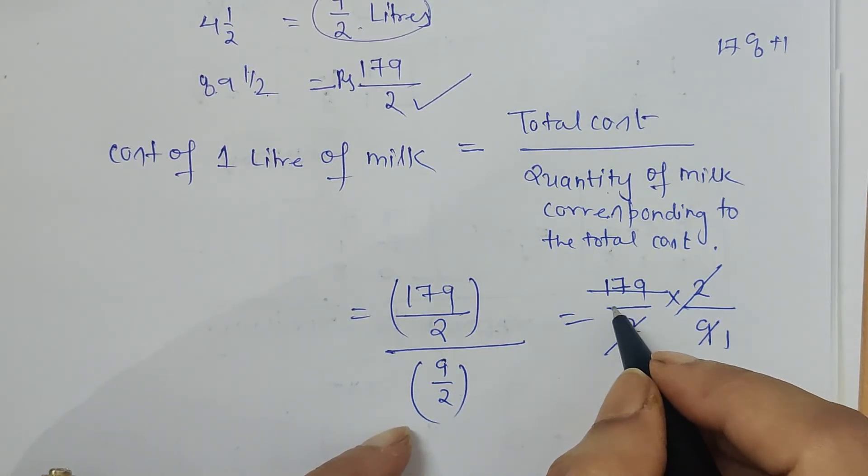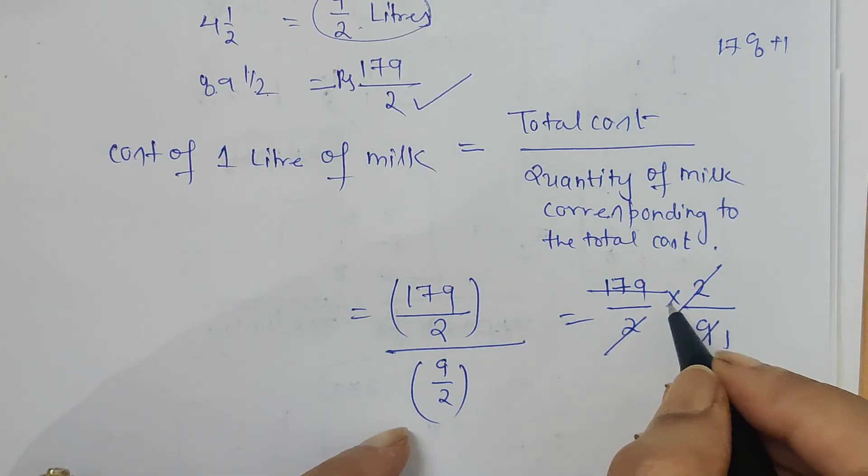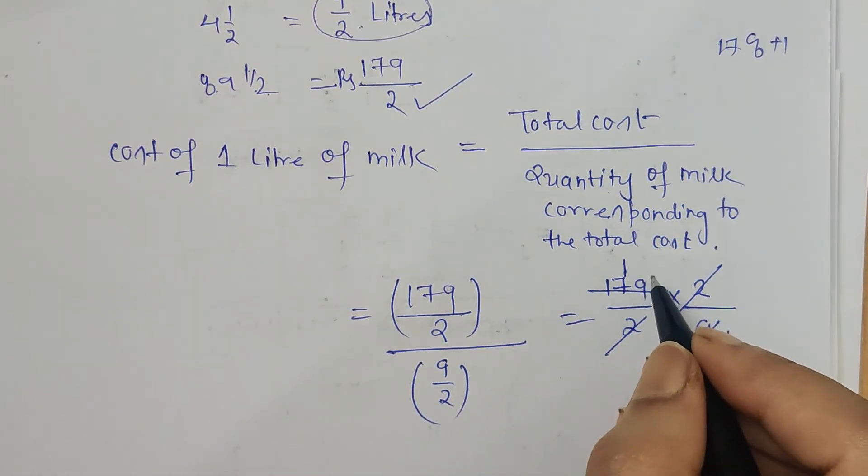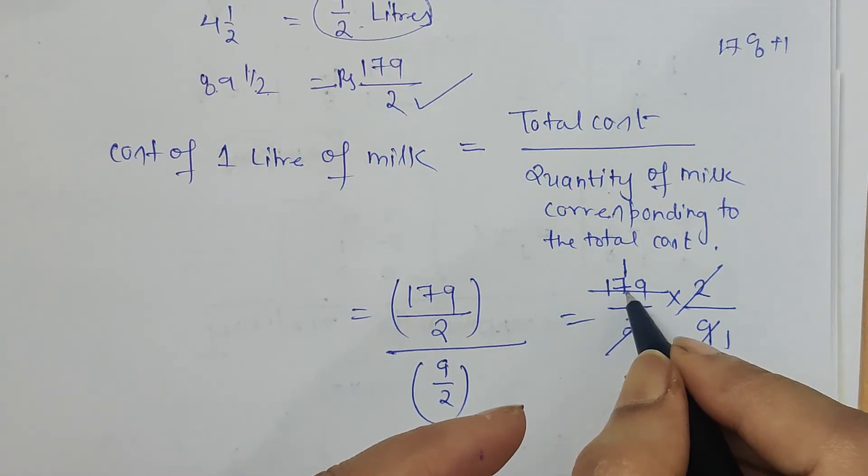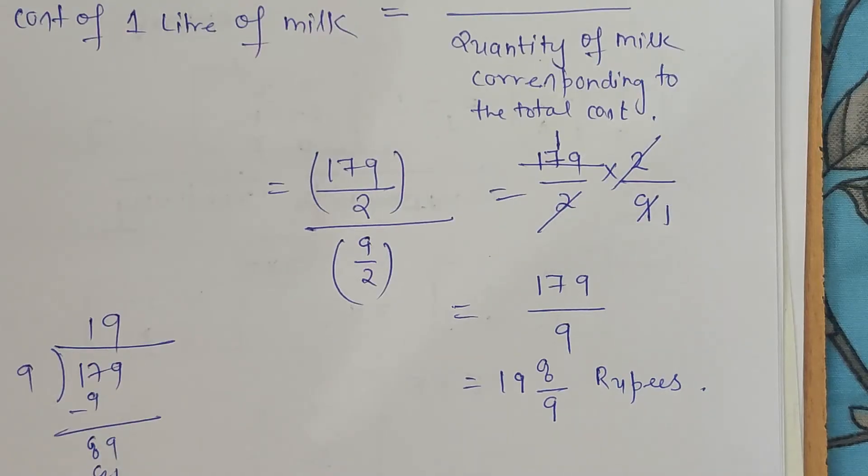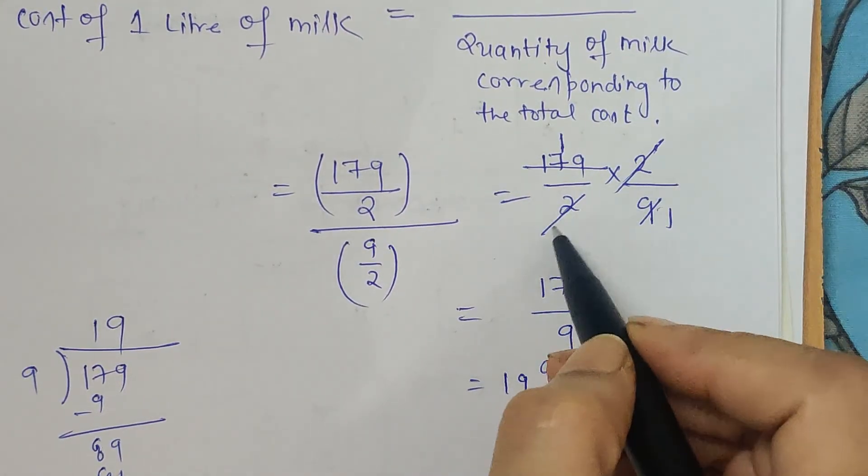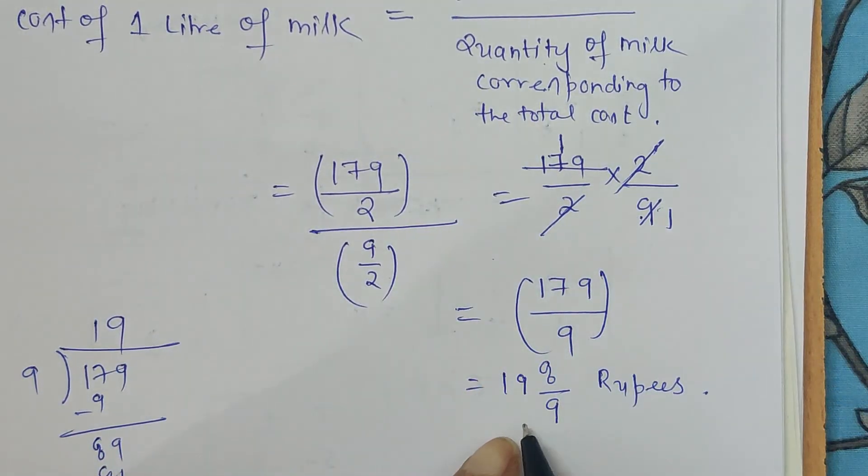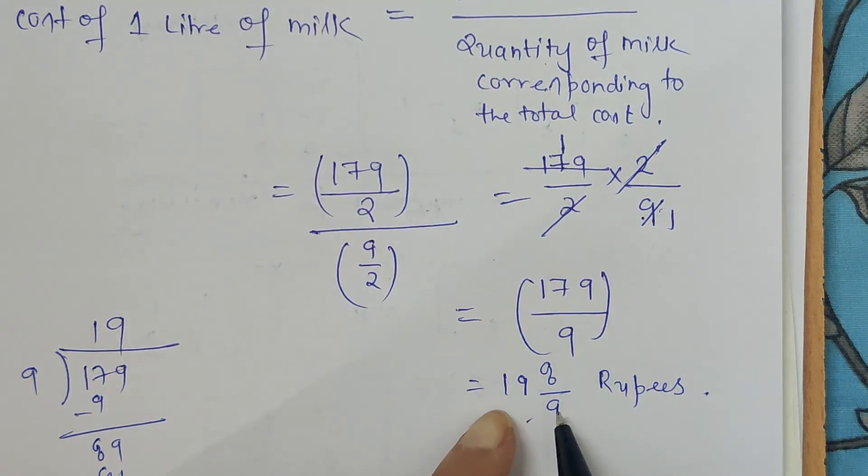So 9 and this is 9, 1 is 9. What is the difference? 89 is left. So here it's not getting cancelled, so it's better we write this remaining 179 upon 9 in mixed fraction form. So 9 into 19 plus 8 gives 179.